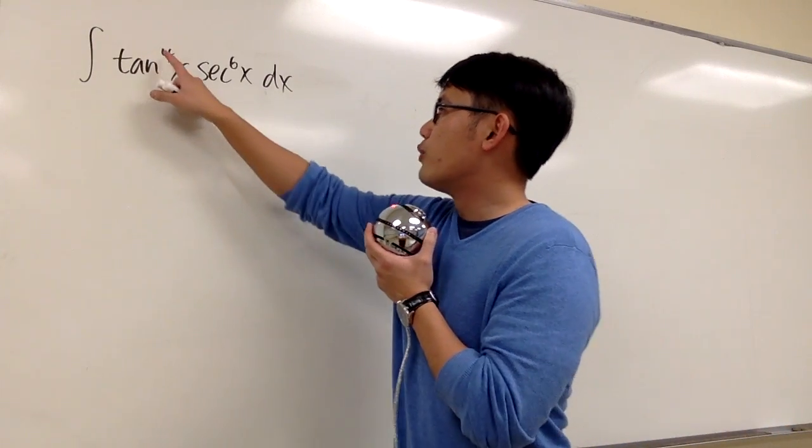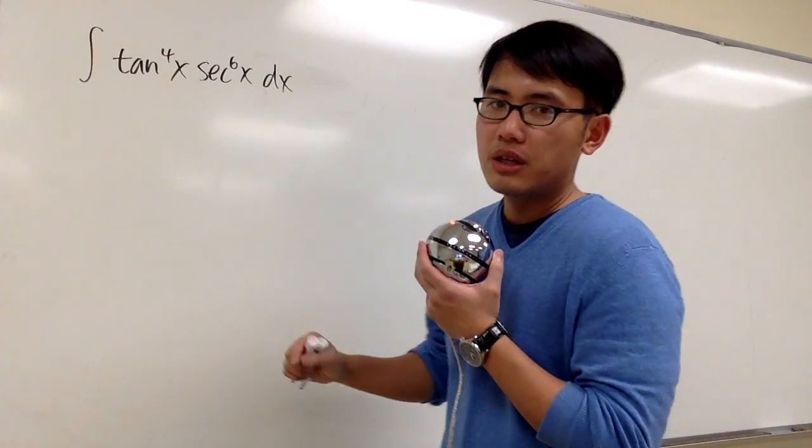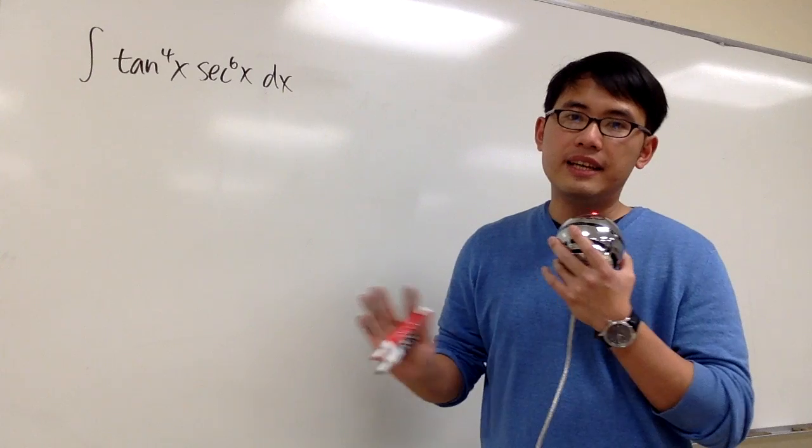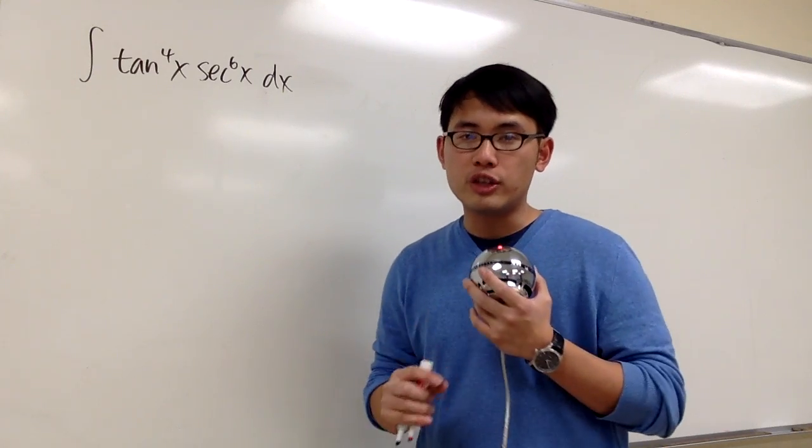We are going to integrate tangent to the fourth power times secant to the sixth power. Now let's just stick with secant and tangent, and then let's think about strategy before we go.